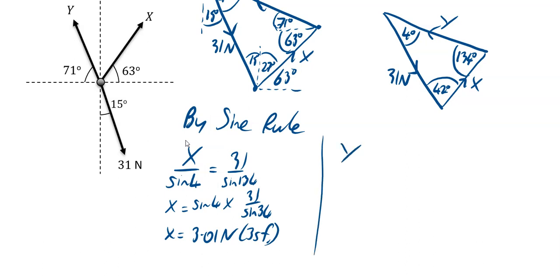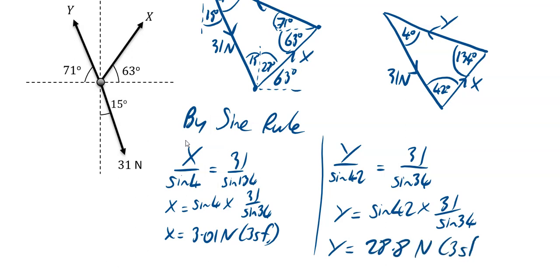Same idea, y divided by its opposite angle, sine of its opposite angle, which was sine of 42, equals 31 over sine of 134, which means y equals sine of 42 times 31 over sine of 134. So y works out to be 28.8 newtons to three sig figs.